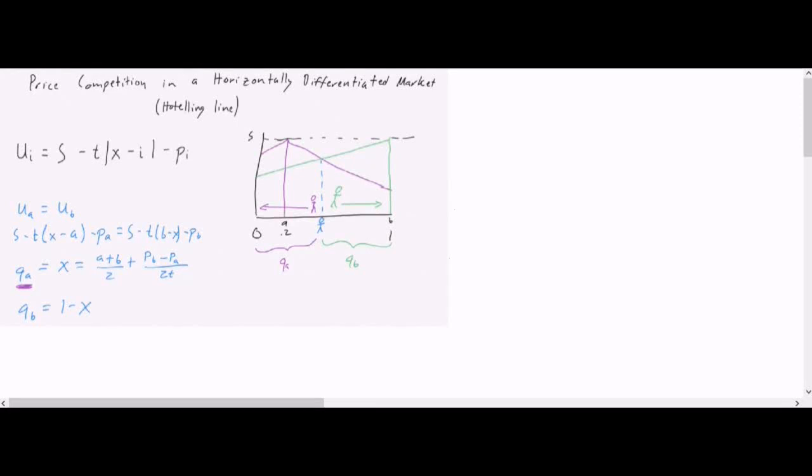Hey everyone, welcome to part 2 of my horizontal product differentiation videos. Part 1 ended kind of abruptly, so let me remind you where we were. We had just solved for these demand curves for two exogenously located firms. That means that we told firm A and B where to be, they didn't actually get to choose it.